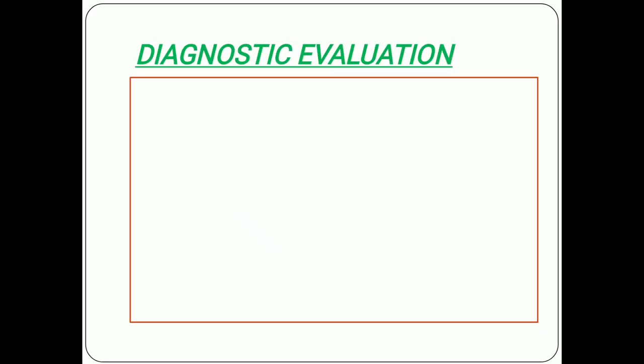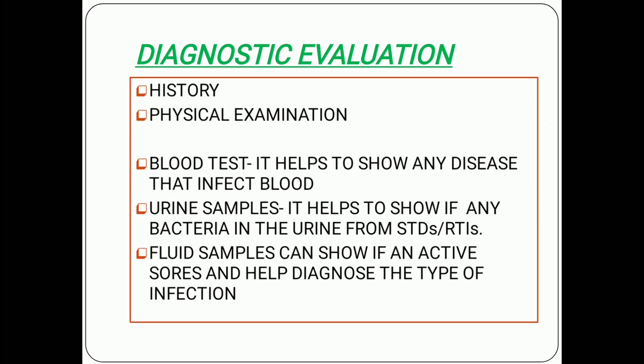Moving forward to diagnostic evaluation: if you see this kind of infection, you need to know the diagnosis. First is history collection, then physical examination. History collection involves the physician taking your history, including past history of STD or RTI or any disease condition. Physical examination involves head-to-toe assessment. Blood tests help to show any disease that infects the blood. Urine samples help to show if any bacteria from STD/RTI are present. Fluid samples can show if any active source exists and help diagnose the type of infection.